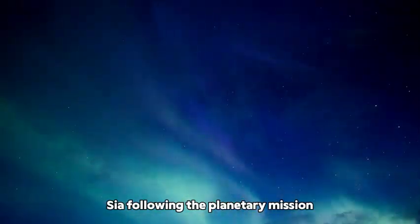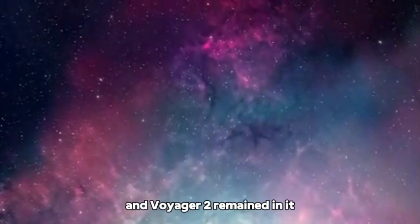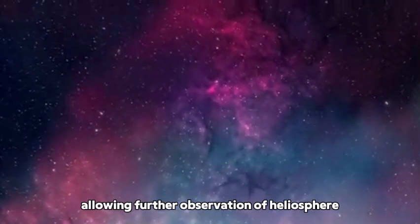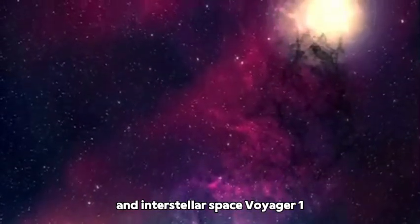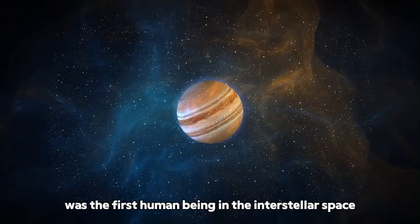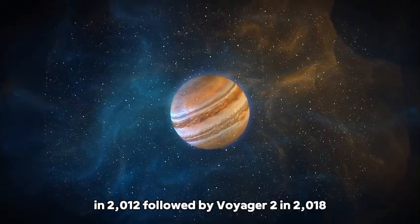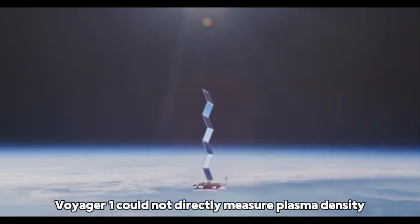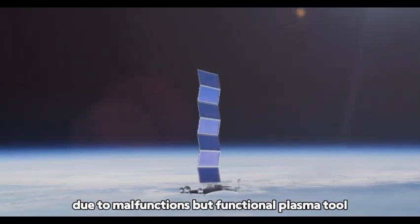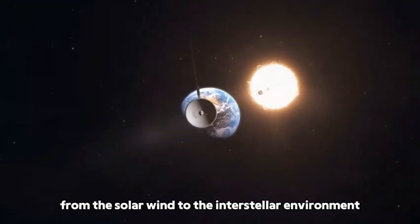Following the planetary missions, the two spacecraft followed different paths. Voyager 1 traveled upward from the plane of the solar system while Voyager 2 remained in it, allowing further observation of the heliosphere and interstellar space. Voyager 1 was the first human-made object to reach interstellar space in 2012, followed by Voyager 2 in 2018. While Voyager 1 could not directly measure plasma density due to malfunctions, Voyager 2's functional plasma tool provided critical data from the solar wind to the interstellar environment.